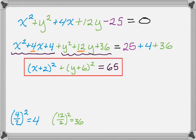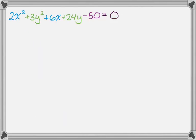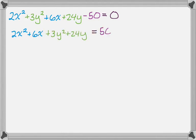Let's take a look at another one that's a little more complicated. Now we have 2x squared plus 3y squared plus 6x plus 24y minus 50 equals 0. I'm going to do the same basic thing — group all the x's, group all the y's, and move the constant over. I'm not leaving a space this time because there's an extra step.